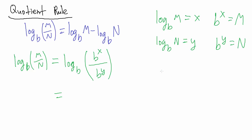Now we use the property of exponents that says B^X divided by B^Y equals B^(X minus Y). So inside the base B log we have B^X divided by B^Y, which simplifies to B^(X minus Y).